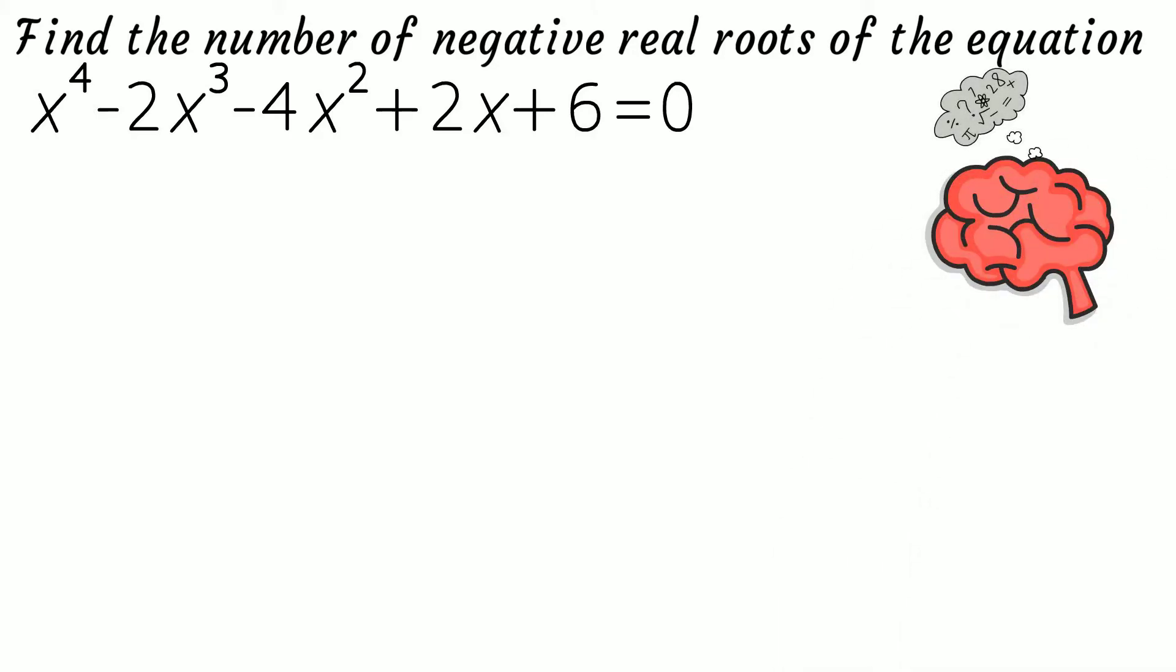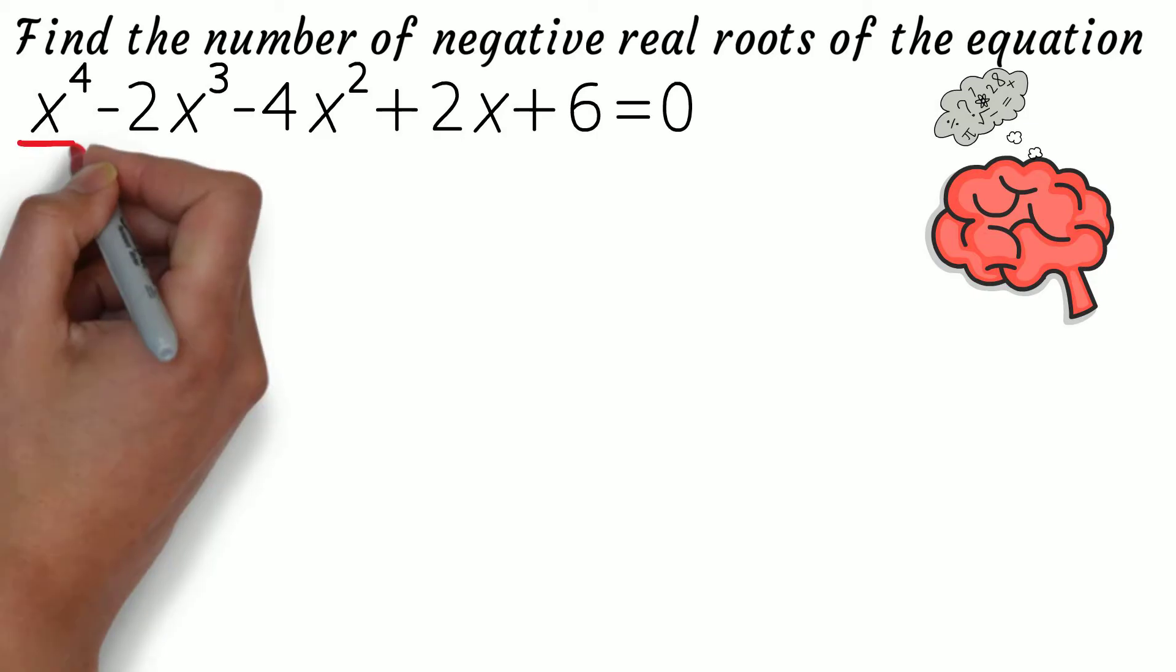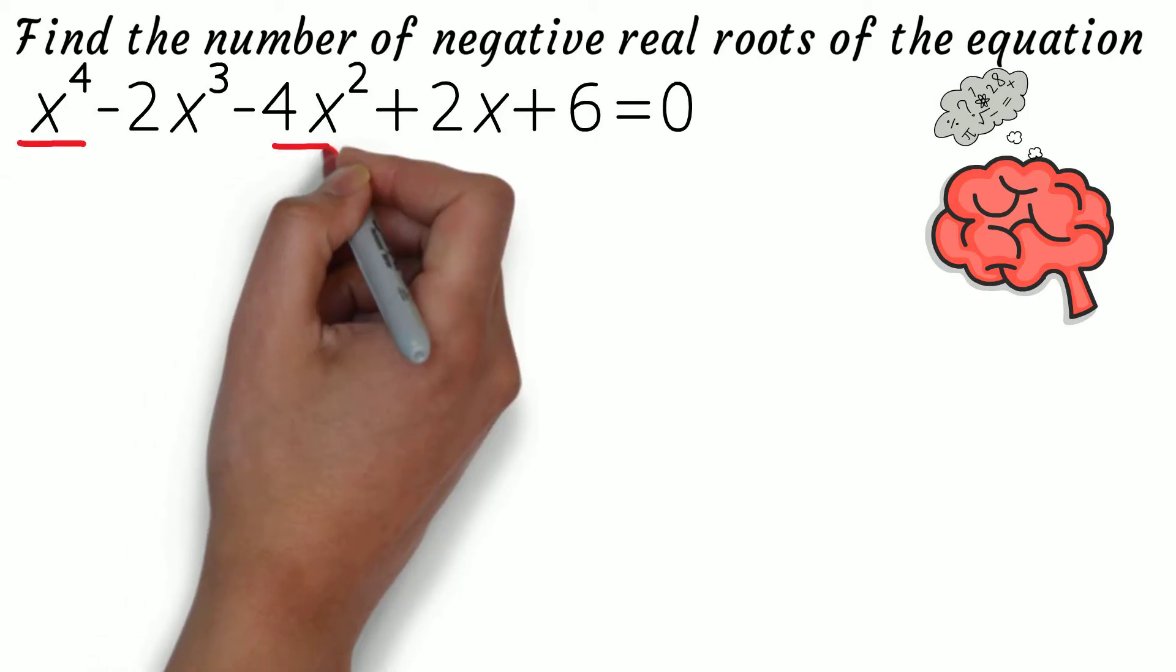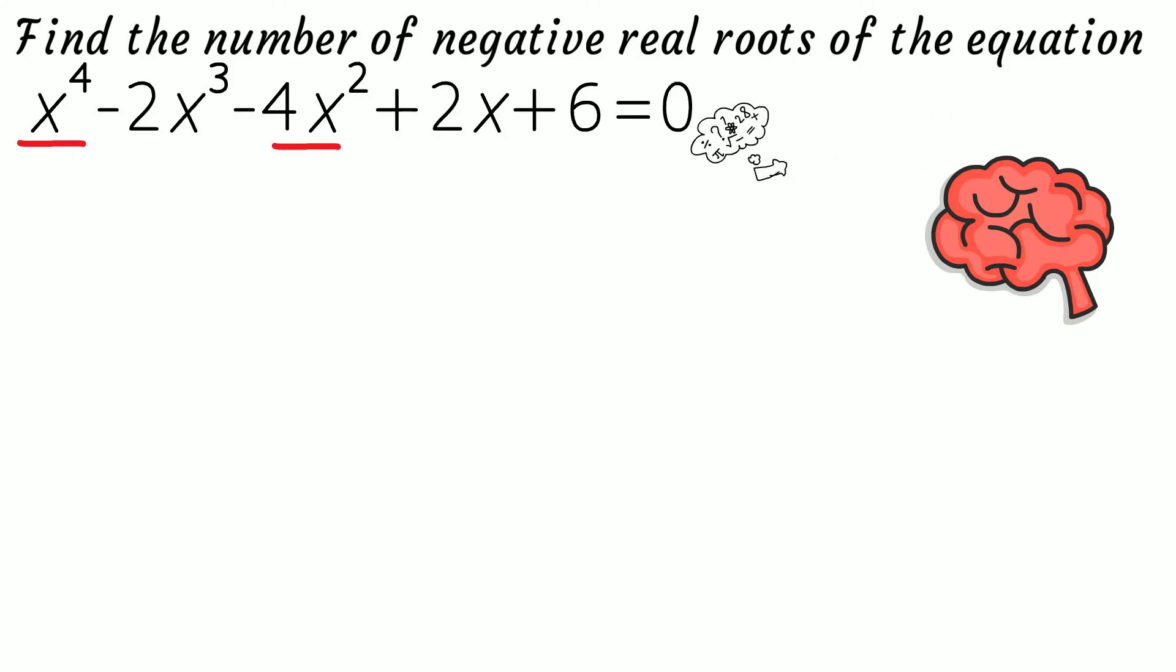After noticing that we have x⁴ and -4x², you would have found that we can factor (x² - 2)².